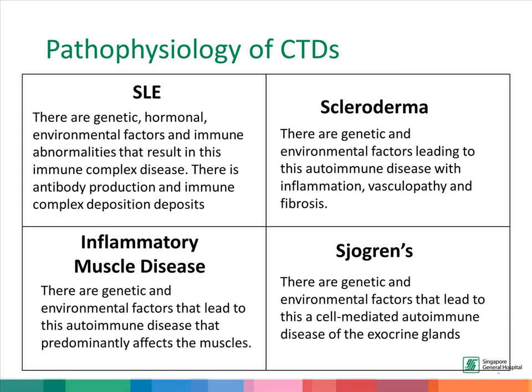Patients with CTDs all have an underlying genetic predisposition to the condition. Then there is an environmental trigger that starts off the autoimmunity. For SLE, there is increased antibody production with immune complex deposition, potentially affecting many organs in the body. In scleroderma, the autoimmune disease is characterized by inflammation, vasculopathy, and fibrosis. In inflammatory muscle disease, the autoimmune process predominantly affects the muscles, and in Sjogren's, it predominantly affects the exocrine glands.